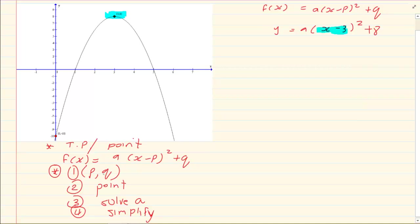Now the next point is substitute your point which in this case was (0, -10). So we're going to put -10 = a(0 - 3)² + 8. That gives us 9a + 8 = -10. I've got 9a = -18, a = -2.